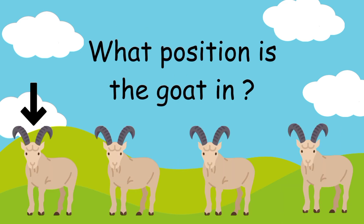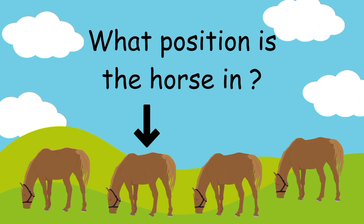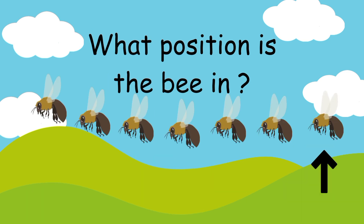What position is the goat in? The goat is in first position. What position is the horse in? The horse is in second position. What position is the bee in? The bee is in seventh position.